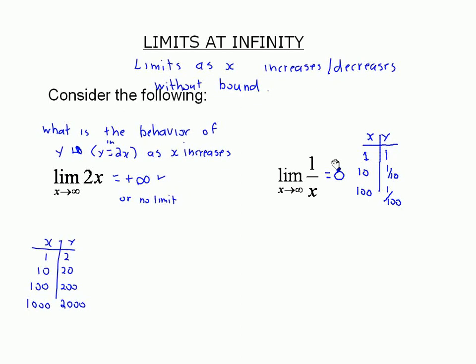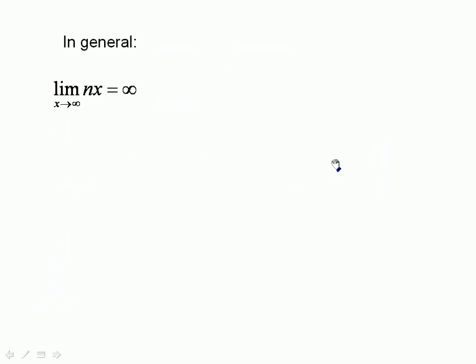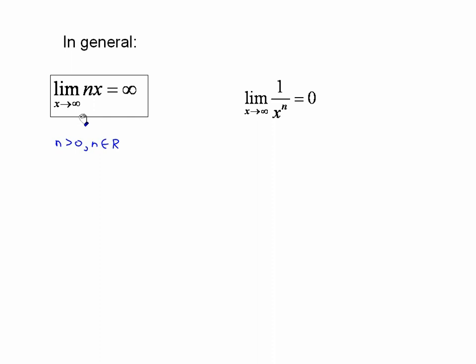It wouldn't even matter if the numerator was 2 or 3 or any number, as long as it stays the same and the denominator is increasing. In general, the limit of nx (where n > 0) is always going to be infinity — increasing without bound. This is true for x squared or x to the 4. And the limit of 1 over x^n equals 0, assuming n > 0.